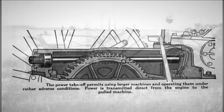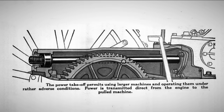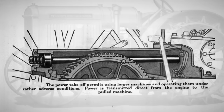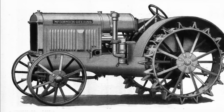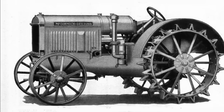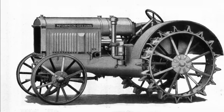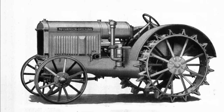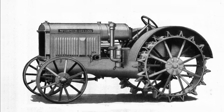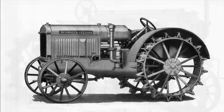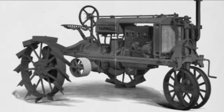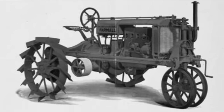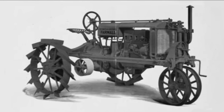The 15-30, which was produced from 1921, would become the first tractor evaluated at the Nebraska tractor test with a PTO. The 1924 Farmall regular model had the PTO as an integral part of the design.